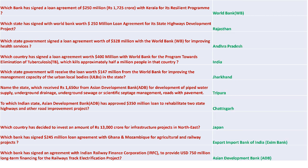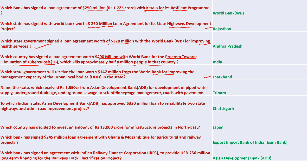The World Bank signed a 250 million dollar (1,725 crore) agreement with Kerala for a resilient program. Rajasthan signed a 250 million dollar loan agreement with the World Bank for the State Highway Development Project. Andhra Pradesh signed a 328 million dollar loan agreement with the World Bank for improving health services. India signed a 400 million dollar loan agreement with the World Bank for a program towards elimination of tuberculosis. Jharkhand will receive 147 million dollars from the World Bank for improving management capacity of urban local bodies.